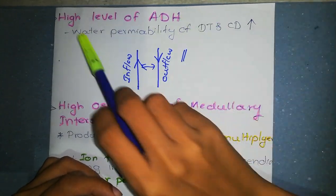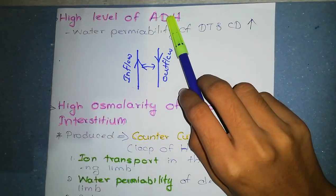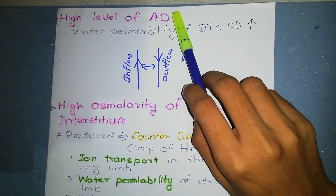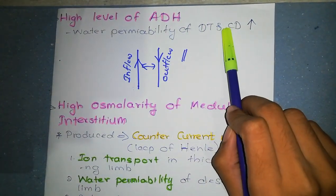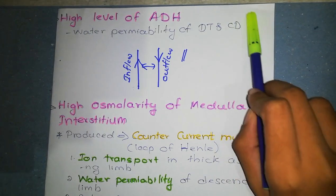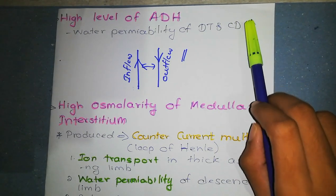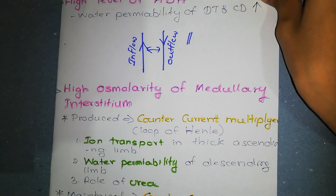Do you know that there are two requirements to form concentrated urine? Number one is high level of ADH which increases the water permeability of distal tubule and collecting ducts of kidney causing more water to reabsorb from tubular fluid. Number two is high osmolarity of medullary interstitium.